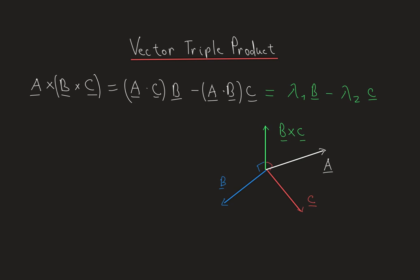The result is perpendicular to b cross c, which means the only possible vectors from this triple product are those that lie on the plane spanned by b and c. That's because both b and c are perpendicular to b cross c by definition of the cross product. So our result will be a vector that lies in the plane spanned by vectors b and c, and therefore it can be written as a linear combination of b and c.